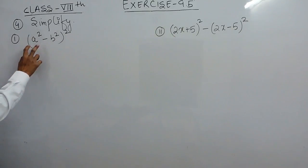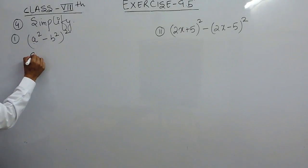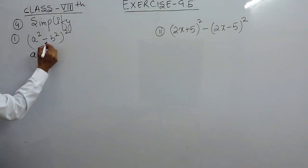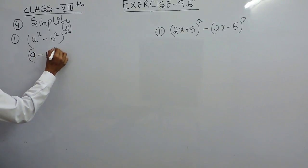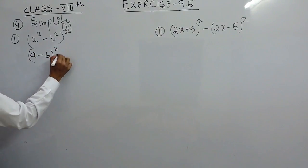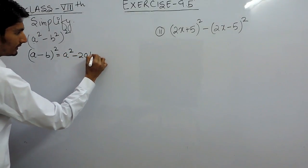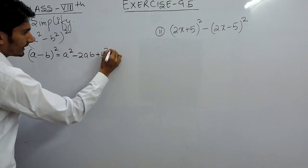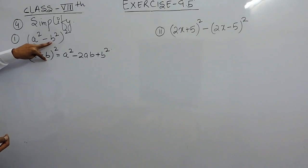This is the first expression. If I suppose this complete as 'a' and this complete as 'b', so this is basically (a - b) whole square, which equals a square minus 2ab plus b square. So our 'a' here is a square and our 'b' is b square.